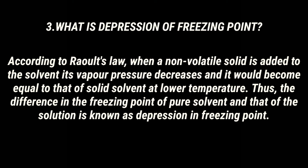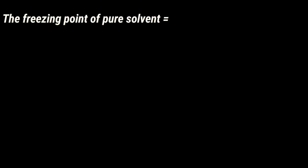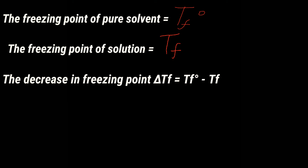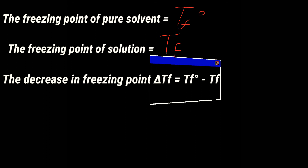What is depression of freezing point? According to Raoult's law, when a non-volatile solid is added to the solvent, its vapor pressure decreases and becomes equal to that of the solid solvent at a lower temperature. Thus, the difference in the freezing point of the pure solvent and that of the solution is known as depression in freezing point. The freezing point of pure solvent equals T_f°; the freezing point of solution equals T_f. The decrease in freezing point, delta T_f, equals T_f° minus T_f. This is known as depression in freezing point.